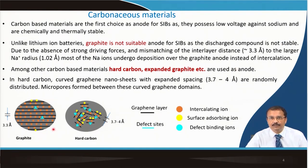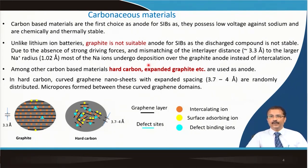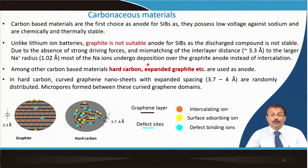When sodium is coming inside the graphite structure during discharge, the structure is not stable due to the absence of strong driving forces and mismatching interlayer distance of 3.3 Å compared to the larger sodium ion radius of 1.02 Å. Most sodium ions undergo deposition over the graphite anode rather than intercalation. Deposition forms a dendrite structure that can grow, disintegrate into the electrolyte, or puncture the separator causing a short circuit.